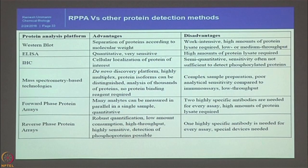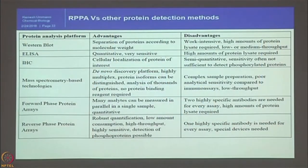Forward protein arrays can measure many analytes in parallel in a single sample and are quantitative, but require two highly specific antibodies. Reverse phase protein arrays offer robust quantification, low sample consumption, high throughput, high sensitivity, and detection of phosphoproteins. However, RPPA also requires highly specific antibodies, every assay needs to be optimized, and special devices are required for this technique.